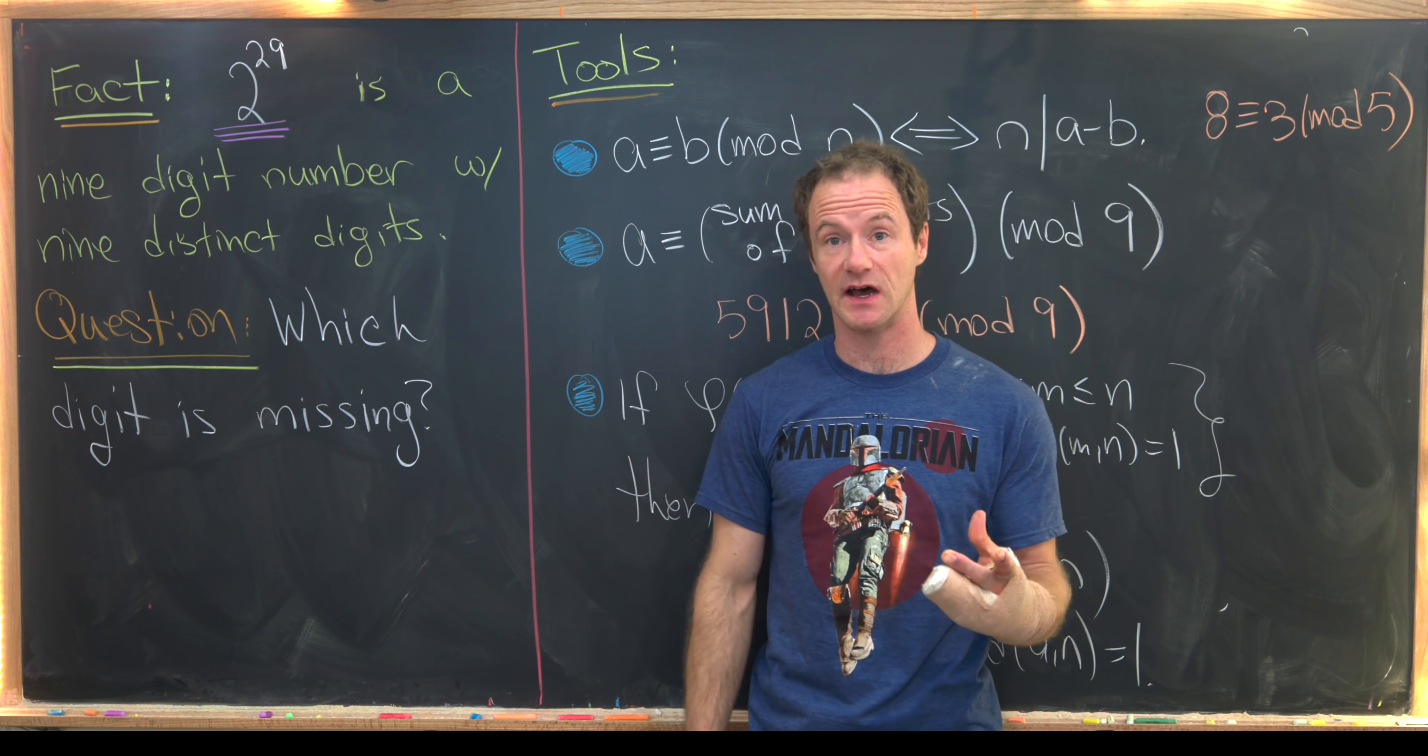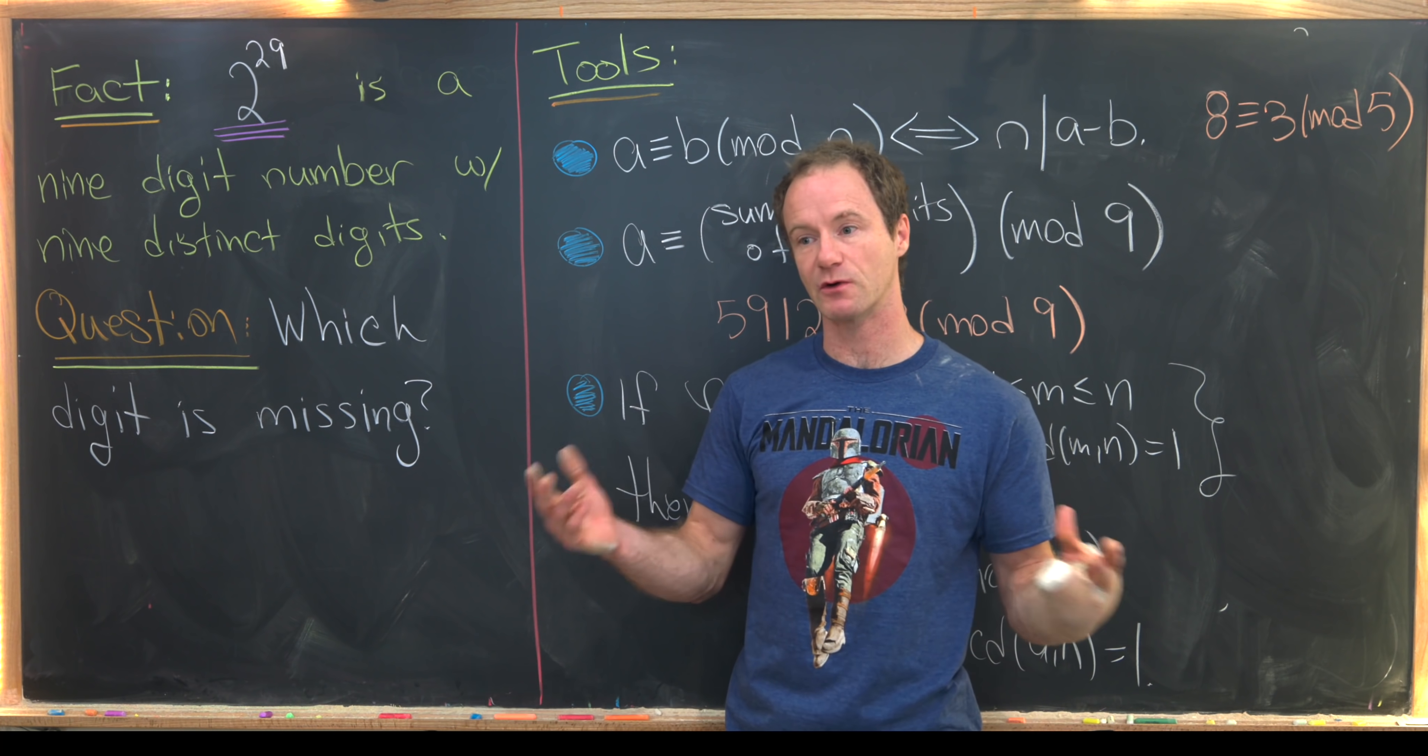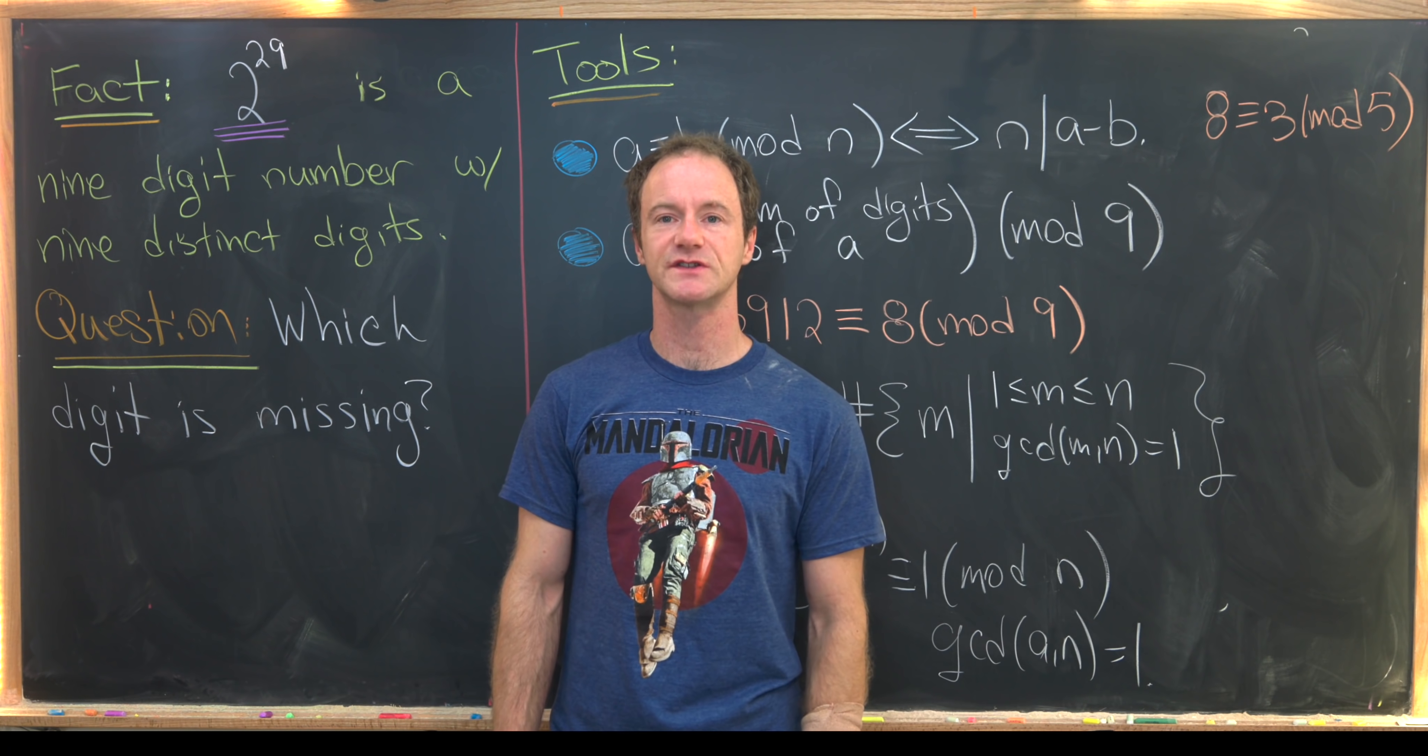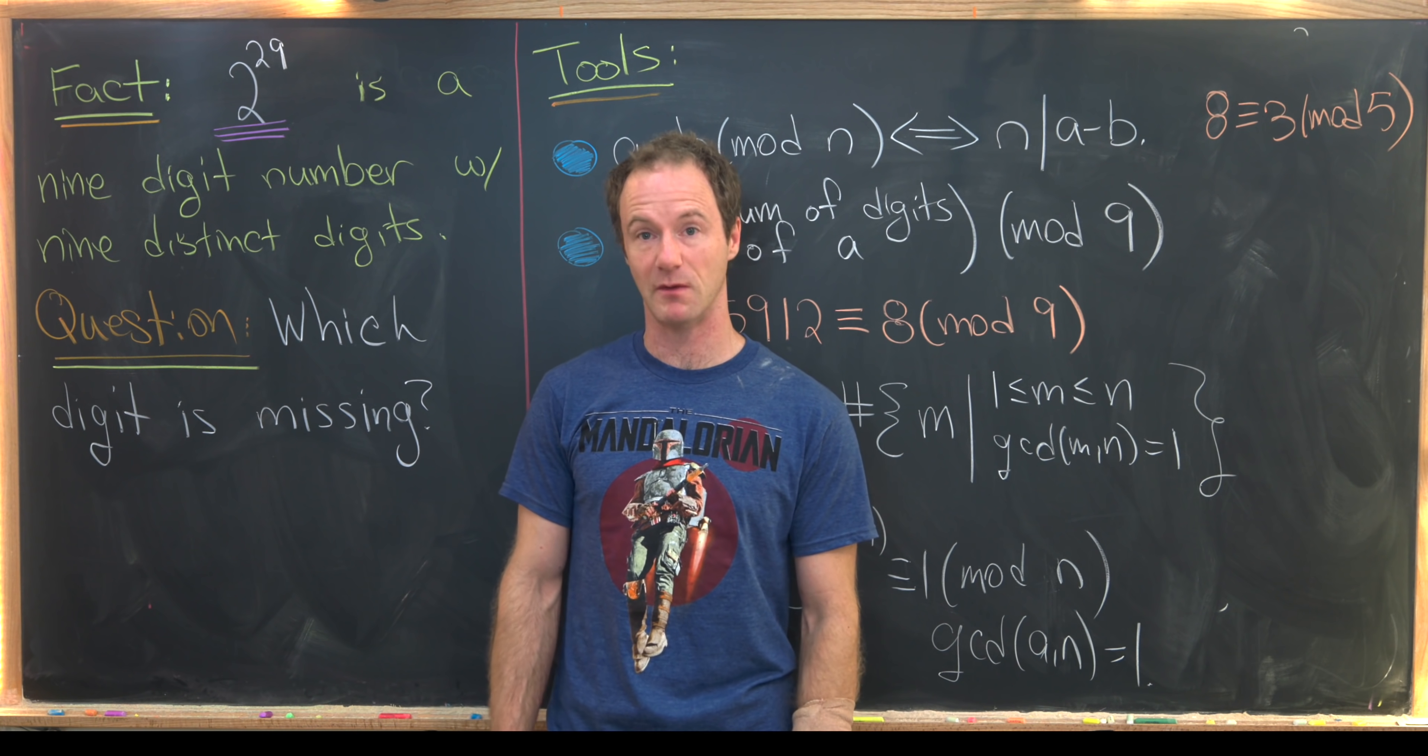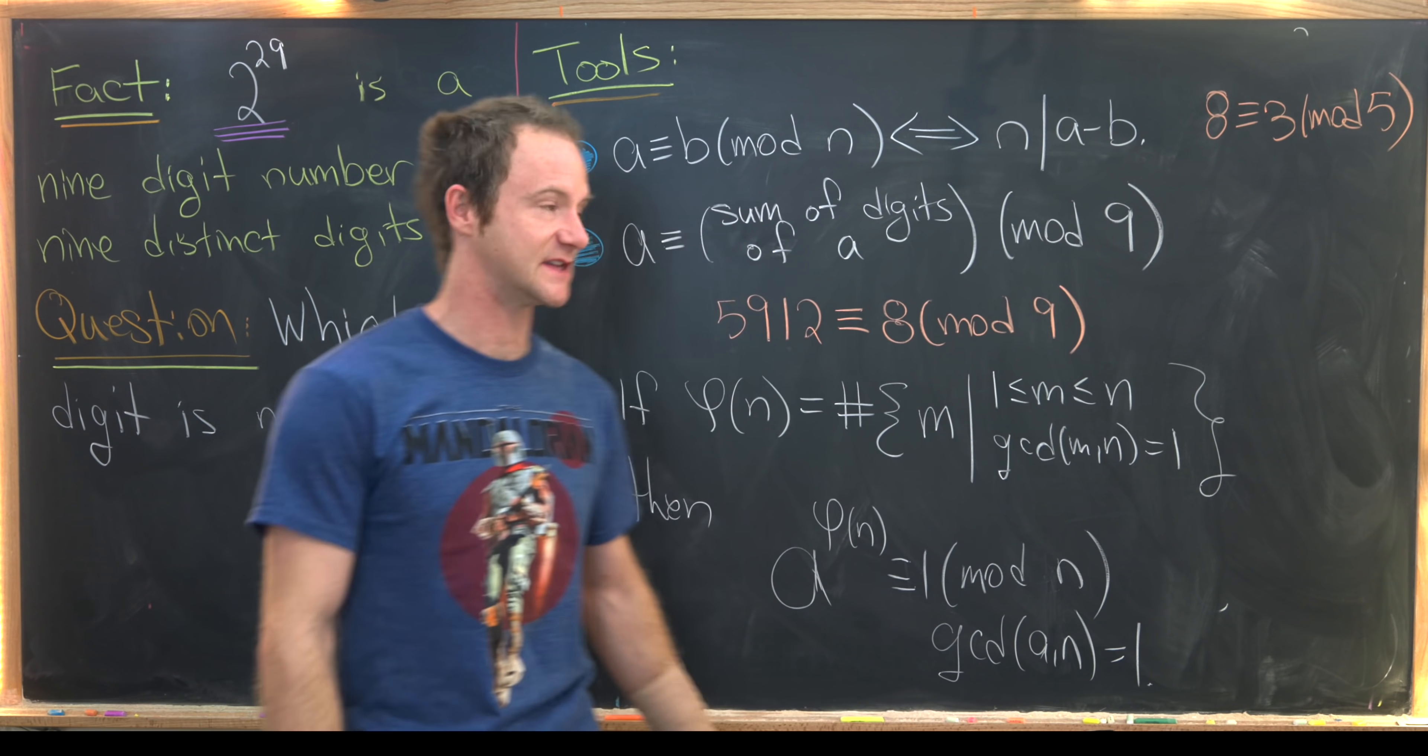But that means one of those has to be missing, because between zero and nine there are a total of 10 numbers. So in order to solve this, we're going to use some fairly standard tricks from number theory, but I want to review them real quick just so that we're all on the same page.